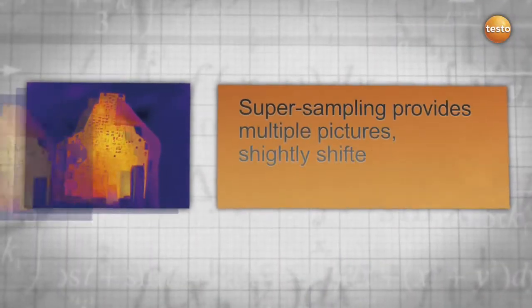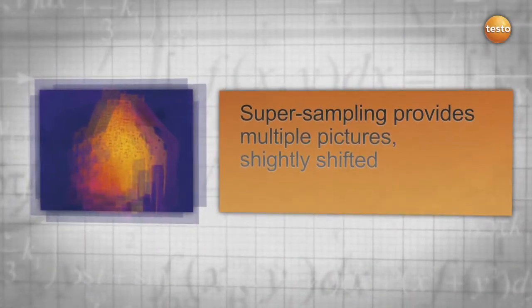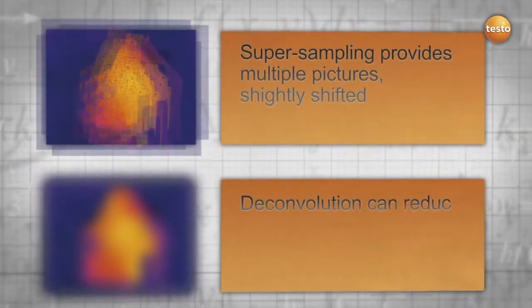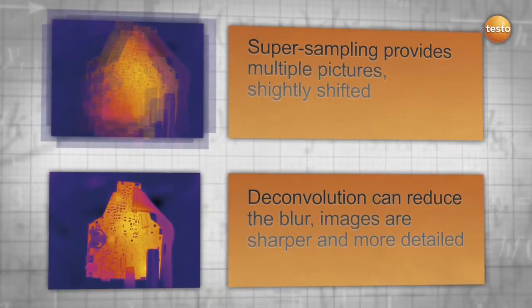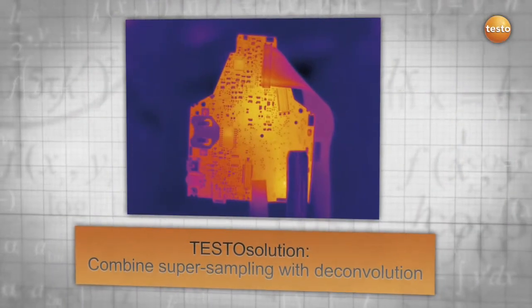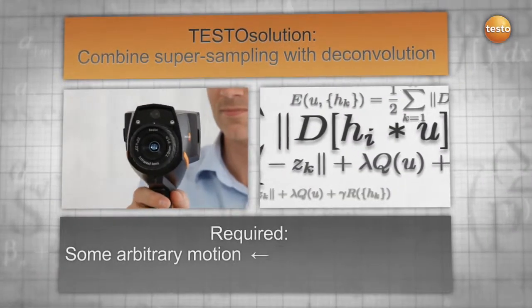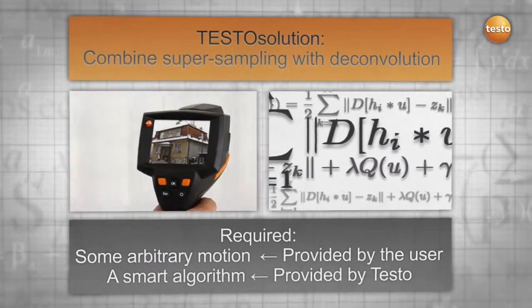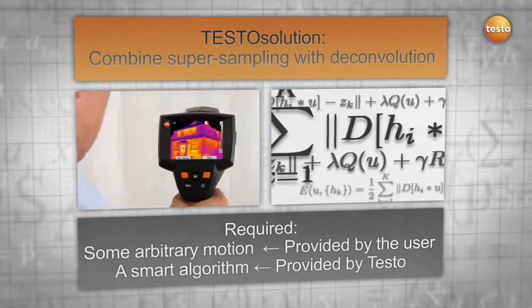The result? Supersampling can take multiple images, slightly shifted, while deconvolution reduces the blurriness. The combination of both is a Testo solution. All we need is the natural movement of your hand and a smart algorithm provided by Testo.